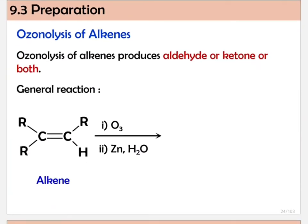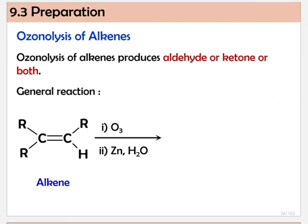So we go to the first reaction — we are going to prepare a carbonyl compound, which can give aldehyde or ketone. For ozonolysis of alkene, it can produce aldehyde, ketone, or both — it depends on the structure of the alkene. The reagent for ozonolysis is a step-by-step reaction: first it reacts with ozone, O3, followed by zinc in H2O. You must mention step one and step two to show that this reaction does not occur all at once.